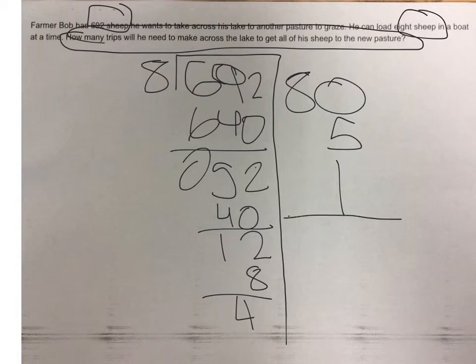So, we add all that we got. 80 plus 5 plus 1 equals 86. And we have a remainder 4.